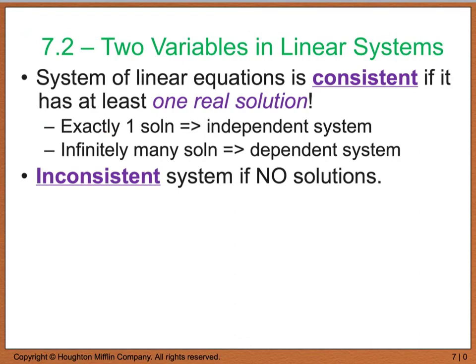We are also going to introduce the idea of a consistent or inconsistent system. A system that is considered consistent is a system that has at least one real solution. One real solution can come from exactly one solution, which is what we call an independent system, or it can come from having infinitely many solutions, which is what we would call a dependent system. If there are no solutions, then we say that we have an inconsistent system.